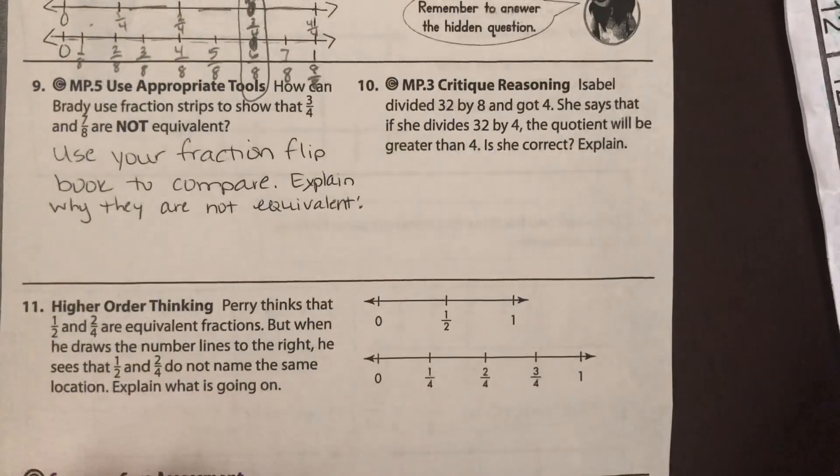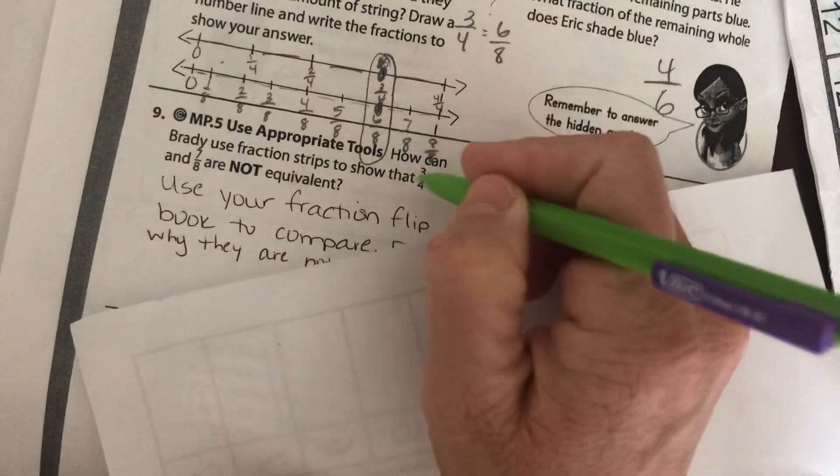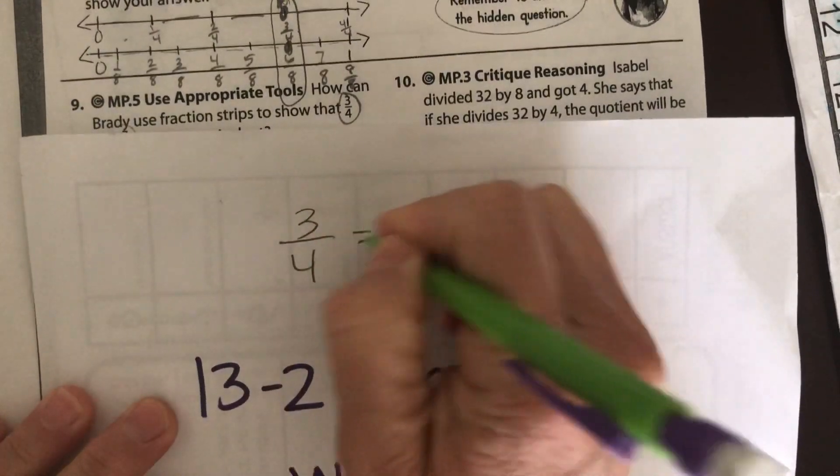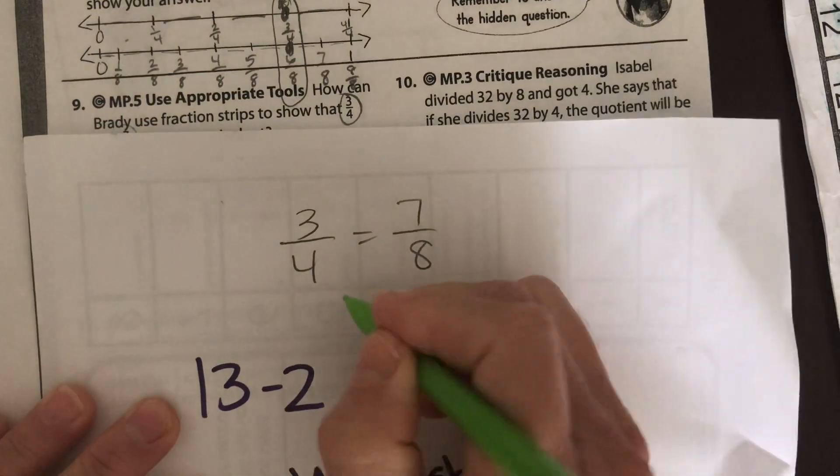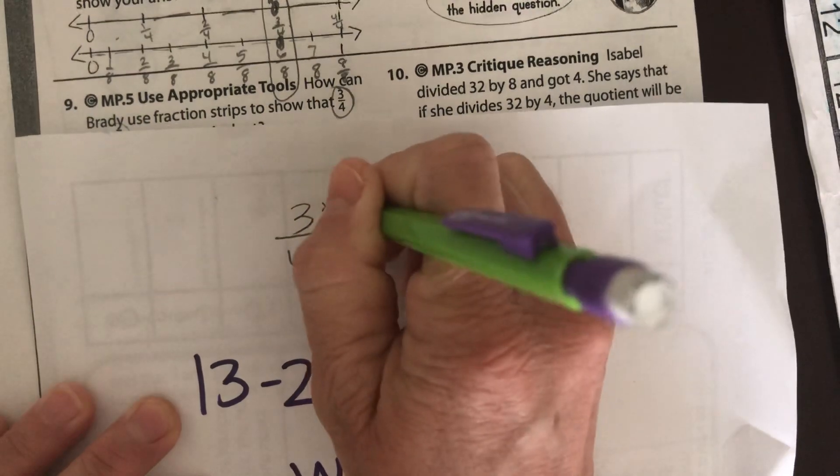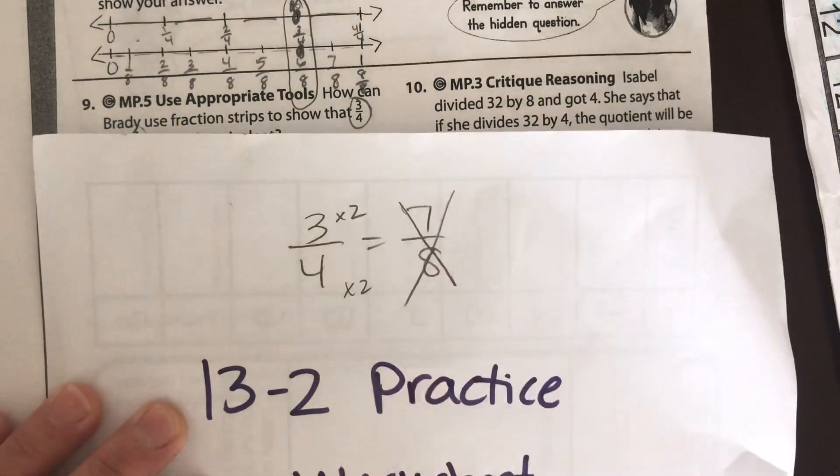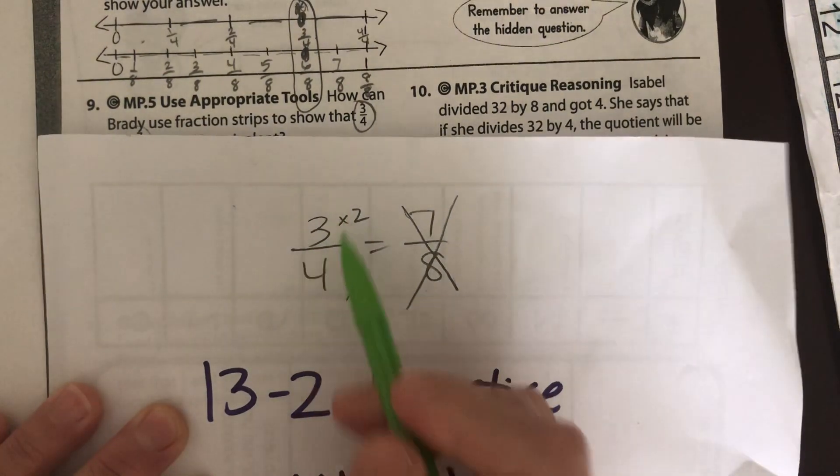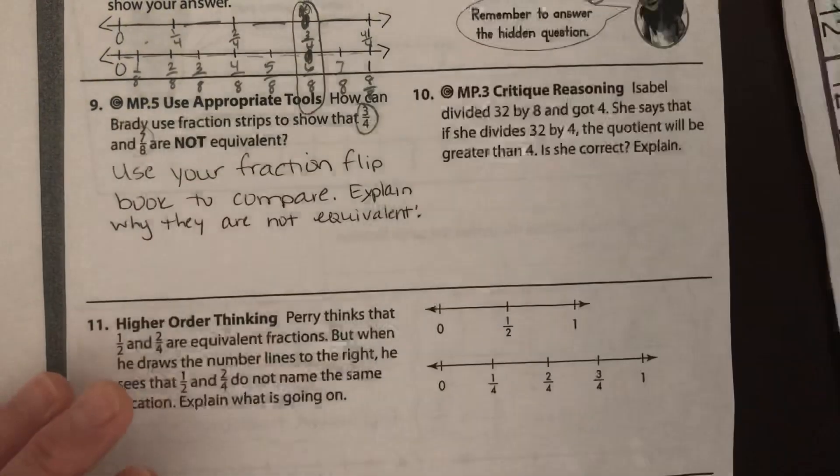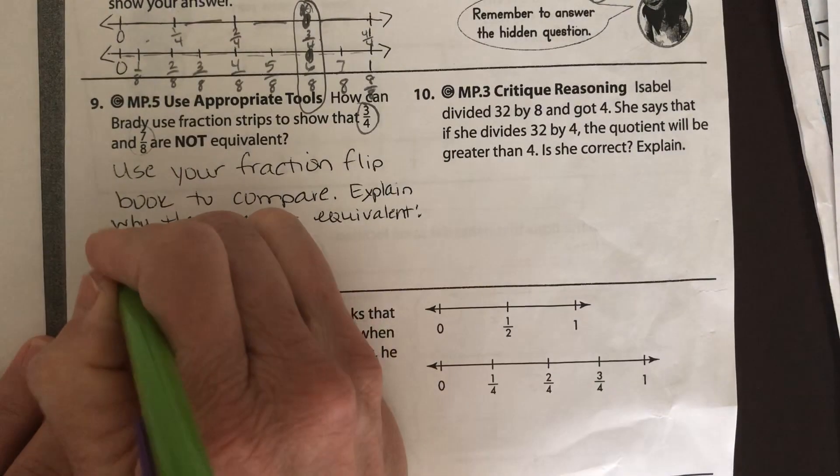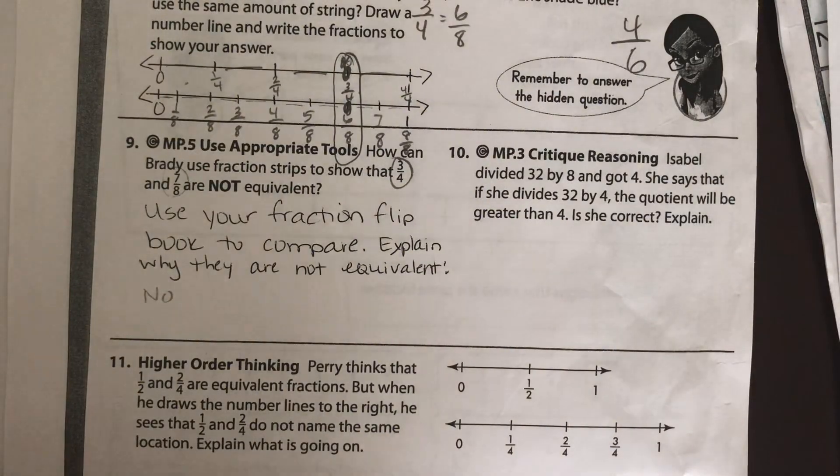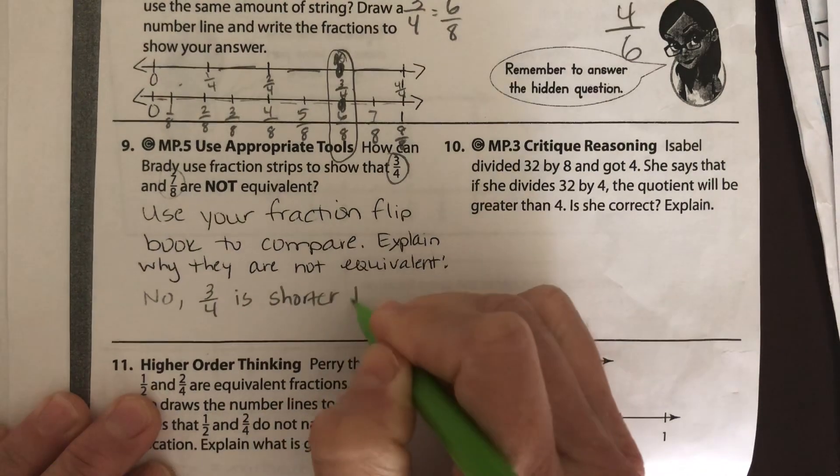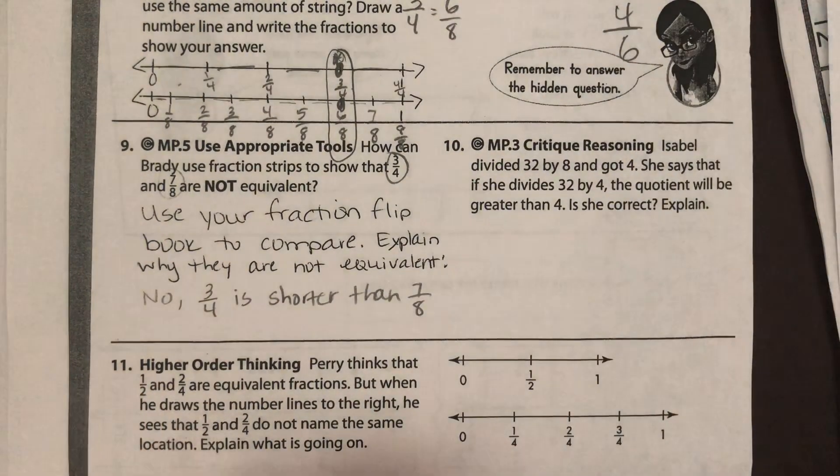Okay, also, we're comparing 3-4ths to 7-8ths, right? So write that down. 3-4ths is equal to 7-8ths. What number do you multiply 4 to get to 8? 2. And is 3 times 2, 7? No. It is not. They are not equivalent. It would have to be 6-8ths in order to be equivalent because if you're multiplying 4 times 2 to get to 8, 3 times 2 also has to be equal on the top. So, no. 3-4ths is shorter than 7-8ths. I'd say shorter, smaller, anything like that.